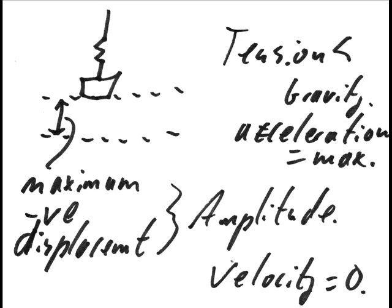The velocity of the mass is zero at maximum displacement as the object has no speed and is stationary at this point. When the acceleration is at its minimum at the equilibrium position, the velocity of the mass is at its maximum.